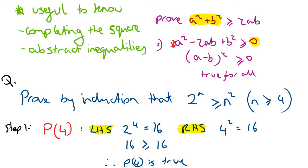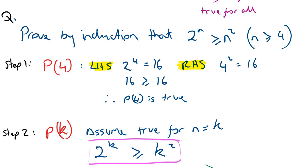Having shown it's true for the lowest possible value of n, our second step is making the assumption that it's true for n = k. So we assume 2 to the power of k is greater than or equal to k squared, and we're going to use that assumption in our proof for n = k + 1.